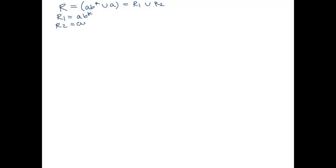So that one can't be decomposed further, but R1 can. R1 is the concatenation of two regular expressions. Let's call them R2, because the first one we've already seen before, and R3. What's R3? It's going to be B star. So R3 is taking the star closure of another regular expression. Let's call it R4. So R3 is R4 star. What's R4? It's the single symbol B.